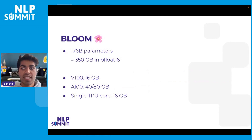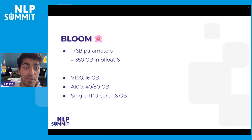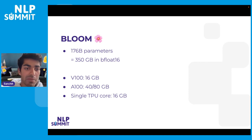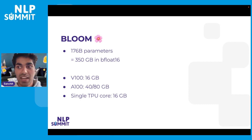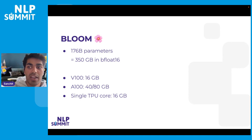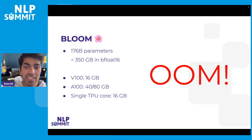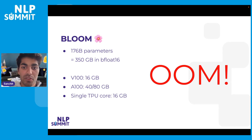However, the sheer size of BLOOM presents its own challenges. Most notably, the parameters of BLOOM require 350 gigabytes of storage alone, and this is in bfloat16 or half precision. Comparing this to standard hardware accelerators such as a V100 GPU, an A100 GPU, or a single TPU core, we see a problem — the model parameters themselves exceed the memory capacity of these hardware devices. This means when we try to load the model onto a device, we get an out-of-memory error, even before loading any data or performing a forward or backward pass.